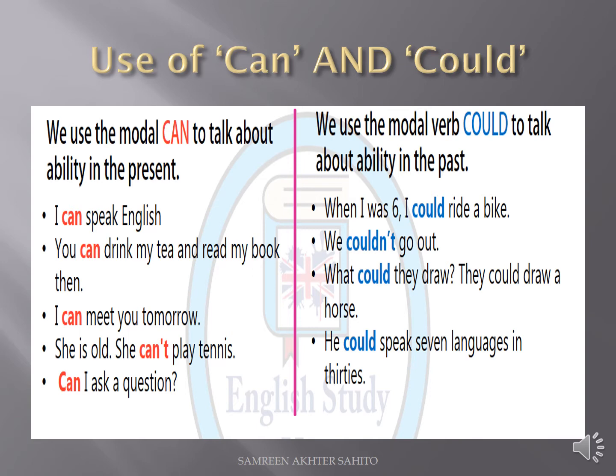It means now I cannot — I have become old. 'We couldn't go out' — that is the negative sentence of could in past tense. 'What could they draw? They could draw a horse.' 'He could speak 7 languages in his thirties' — meaning now he has become old and cannot speak those 7 languages.